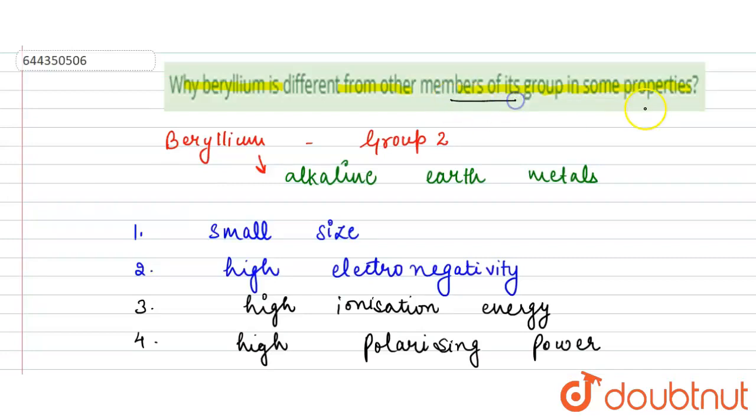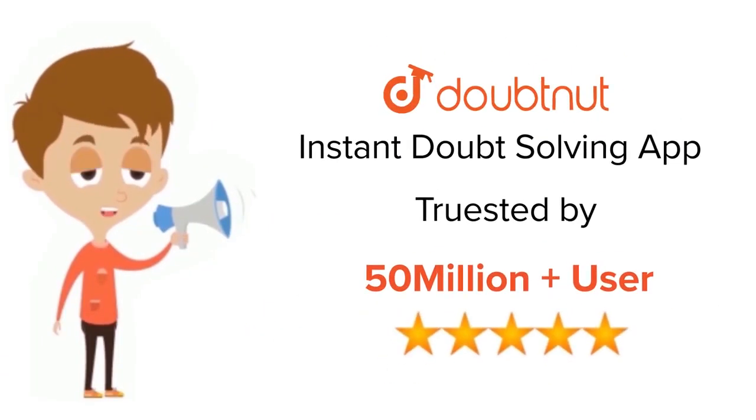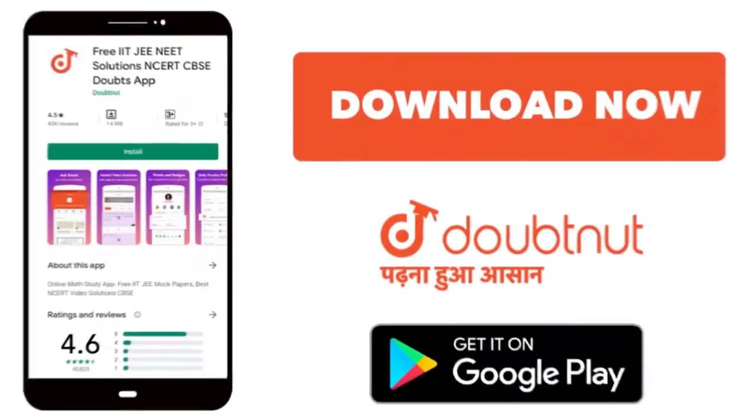So this is how beryllium differs from the other members of its group in some properties. So this is our answer. Thank you. For class 6 to 12th, IIT-JEE and NEET level, trusted by more than 5 crore students. Download Doubtnet app today.